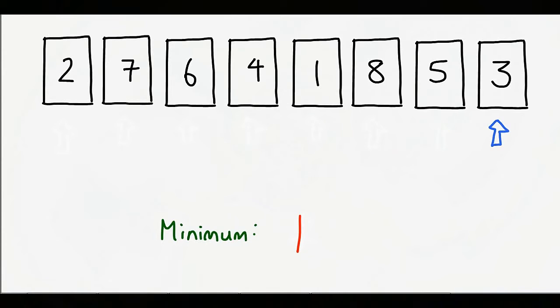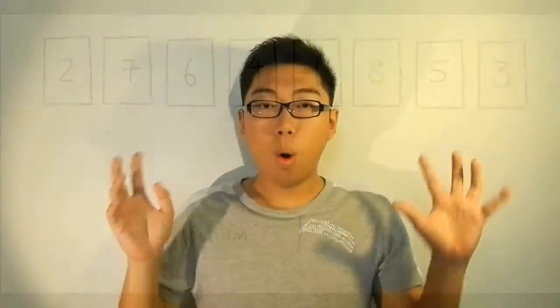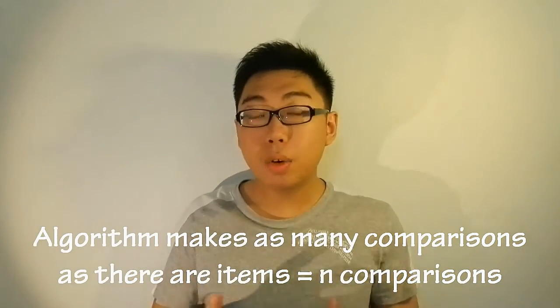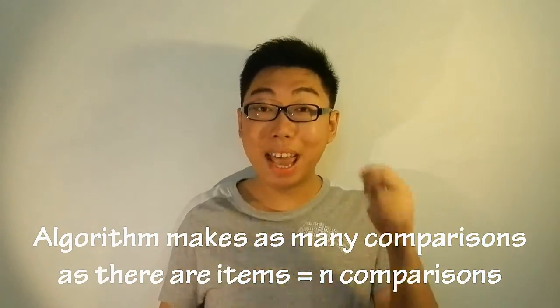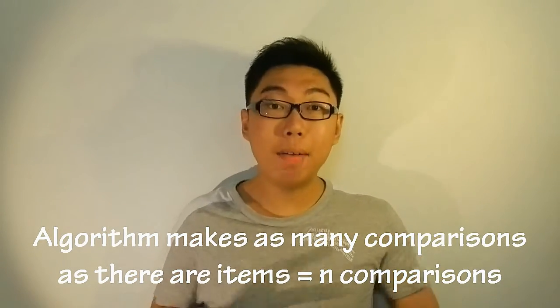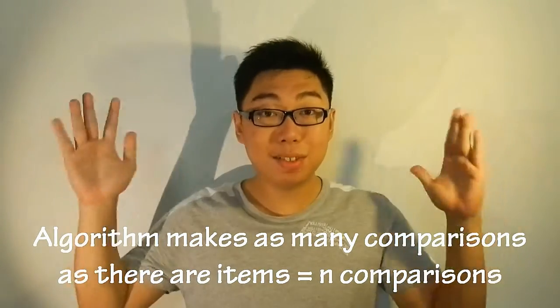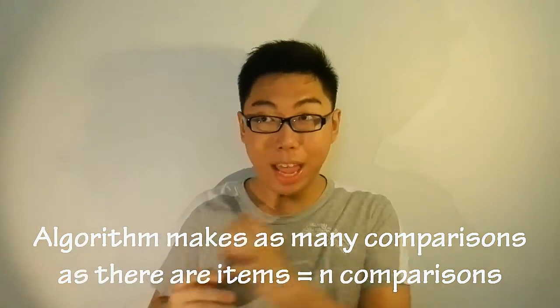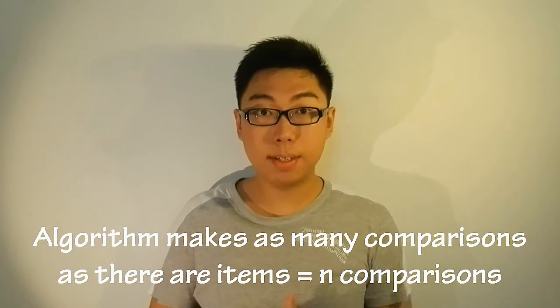I also need to take note somewhere else what is the smallest item I've encountered so far. Only after I've finished a pass through the entire list can I tell which number is the smallest. In other words, this algorithm must make n comparisons — because it's a list of size n and it runs through every item once.